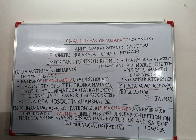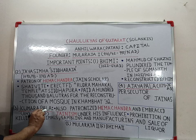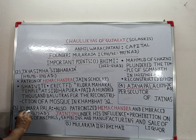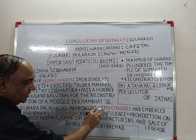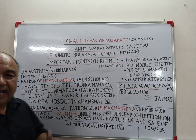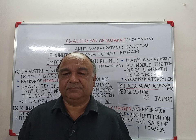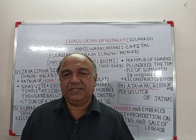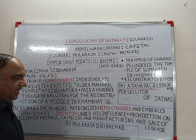The next important ruler of the dynasty was Kumar Pali. Not only Jaisingh Siddharaj, but Kumar Pali also patronised the Jain scholar Hemachandra. It is said that under his influence, Kumar Pali embraced Jainism — that is, he adopted Jainism.